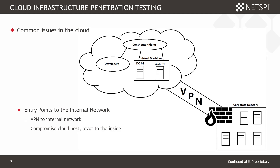What we're frequently seeing is that the internal network is becoming more and more integrated with the cloud network via VPN connections. If one of these virtual machines out in the cloud is compromised, you may be able to pivot back to the internal corporate network and gain unintended access through the cloud. From an attacker's perspective, the cloud environment may actually be a more interesting target than traditional VPN services or Outlook Web Access — once you access the cloud environment, you can potentially pivot in through the VPN.